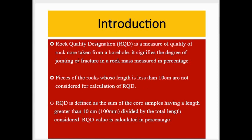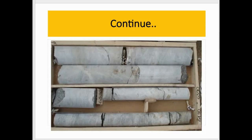RQD signifies the degree of jointing or fracture in a rock mass, measured in percentage. Pieces of rock whose length is less than 10 cm are not considered for calculation of RQD. RQD is defined as the sum of the core samples having a length greater than 10 cm divided by the total core run length, expressed as a percentage.